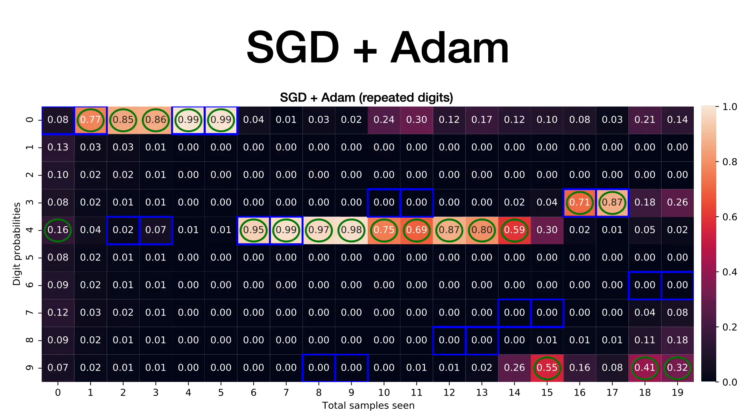And if we compare this to SGD and Adam, such a fast association is not happening. The network requires many trials to make the correct predictions. Increasing the learning rate or multiple gradient steps on the same example do not produce comparable results to VSML.